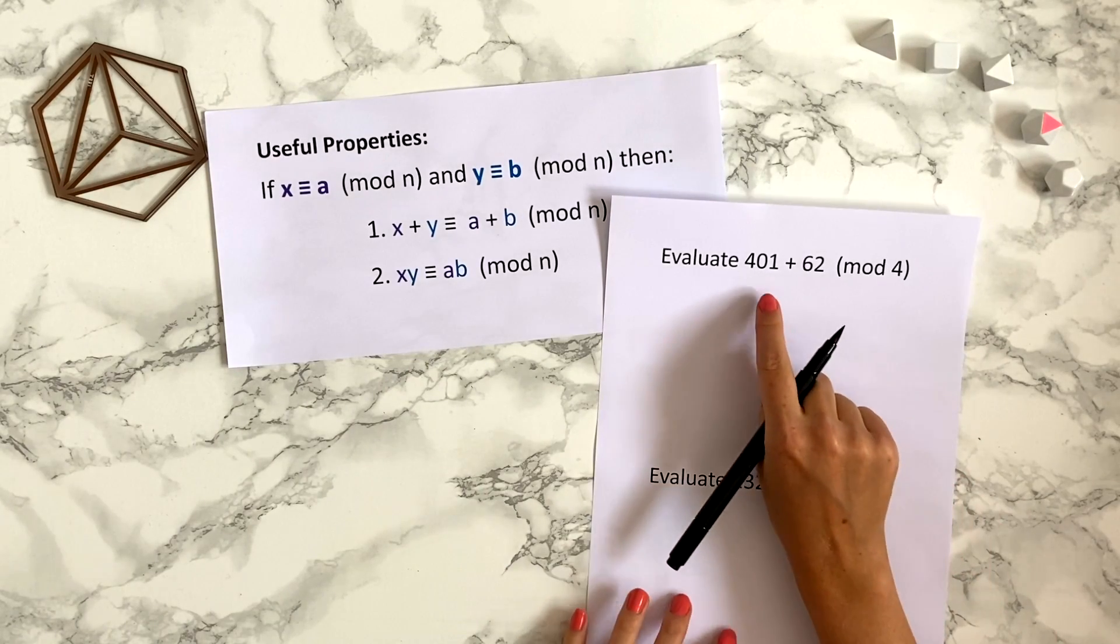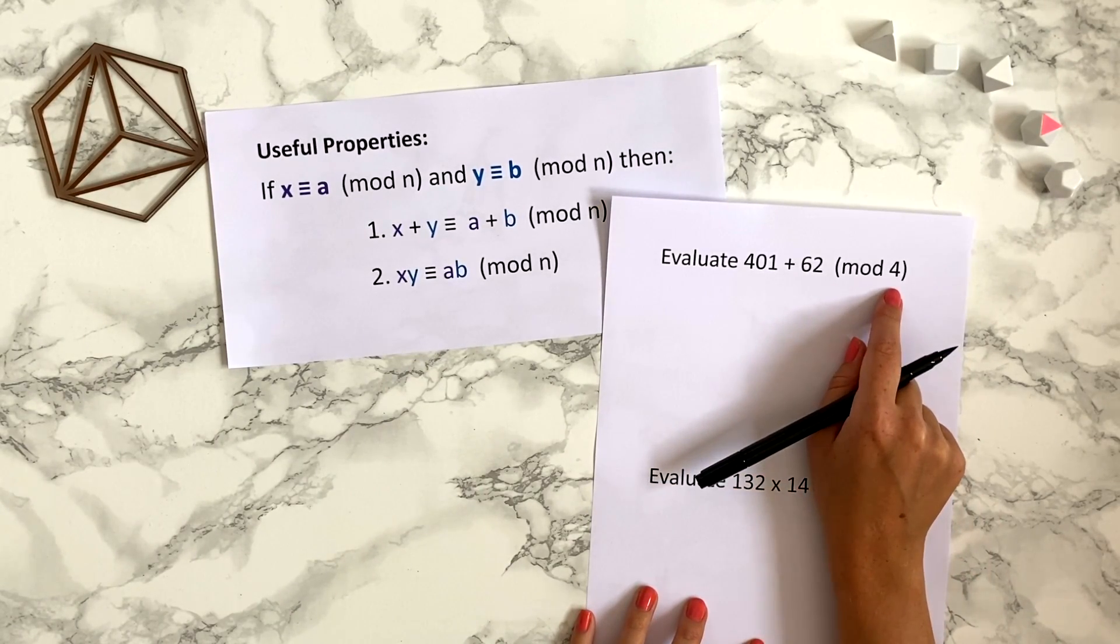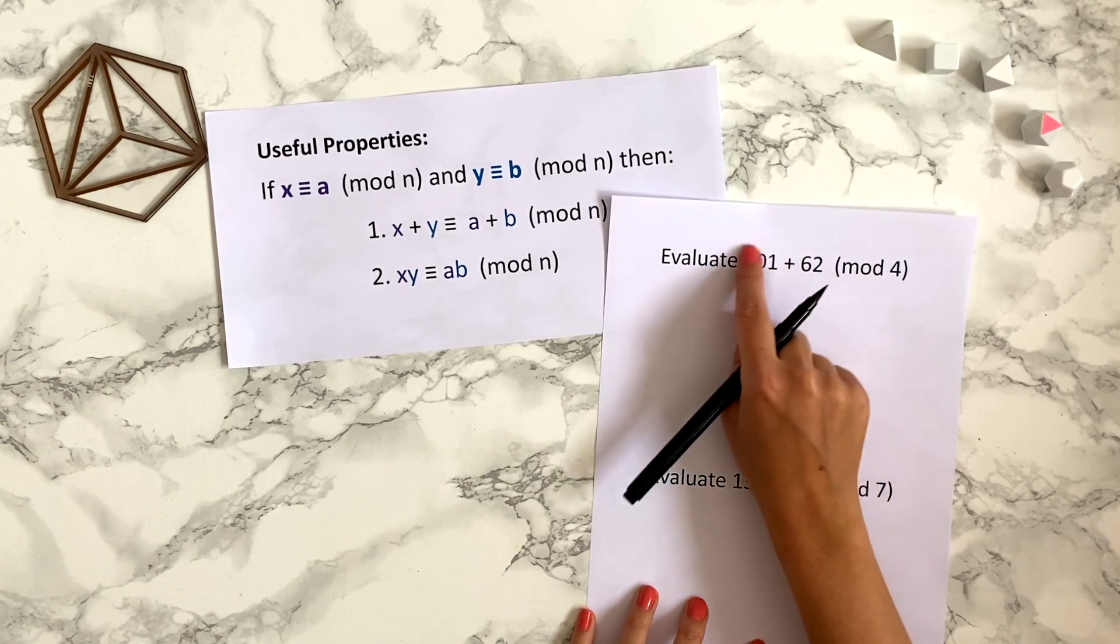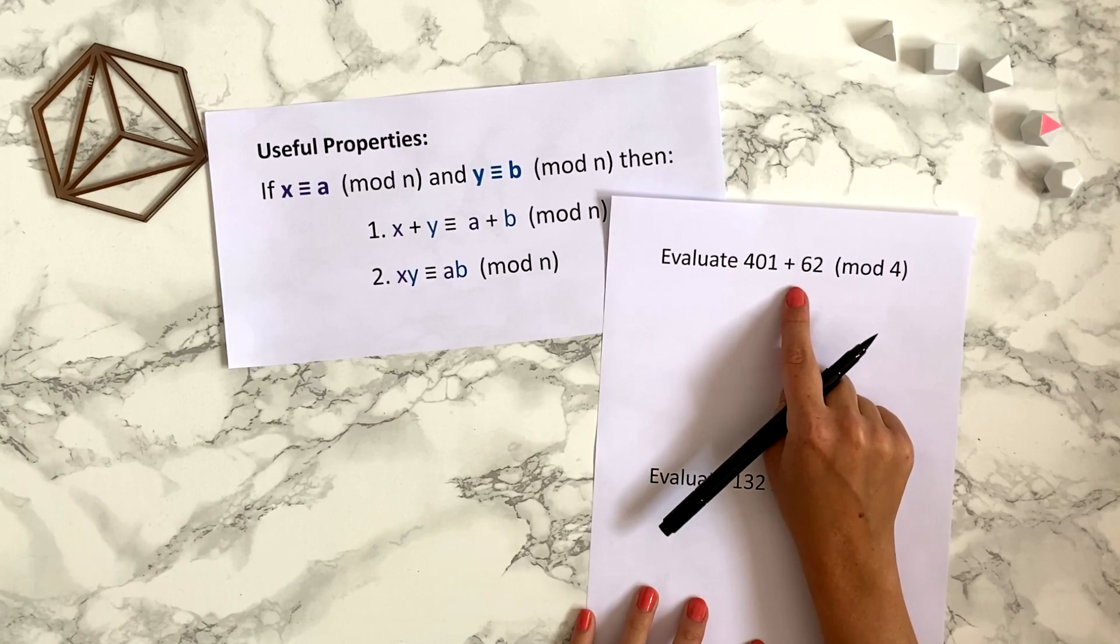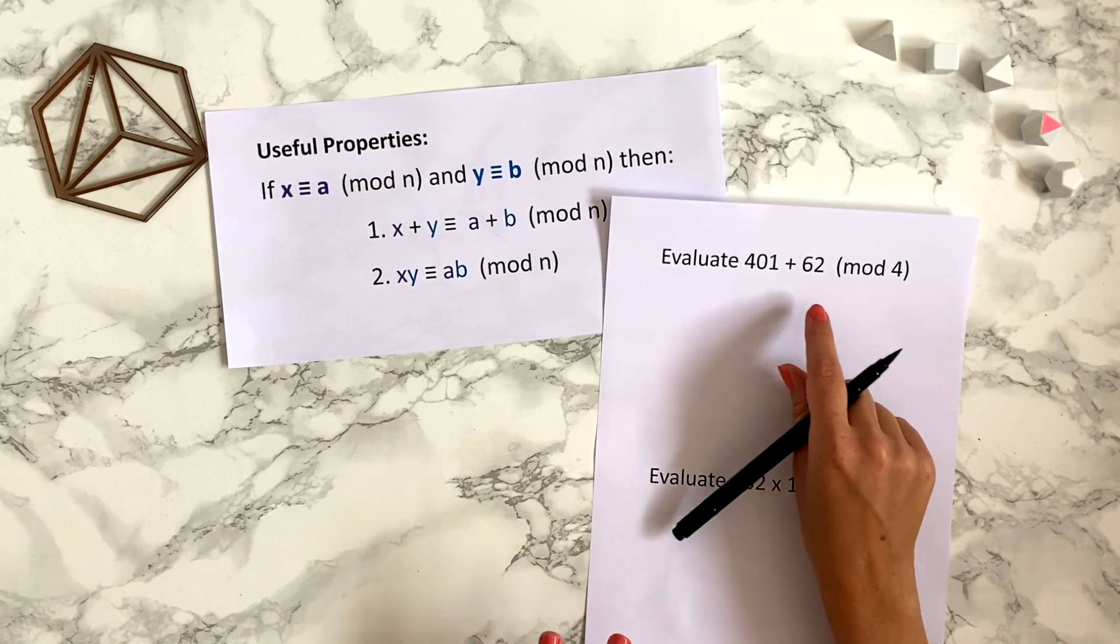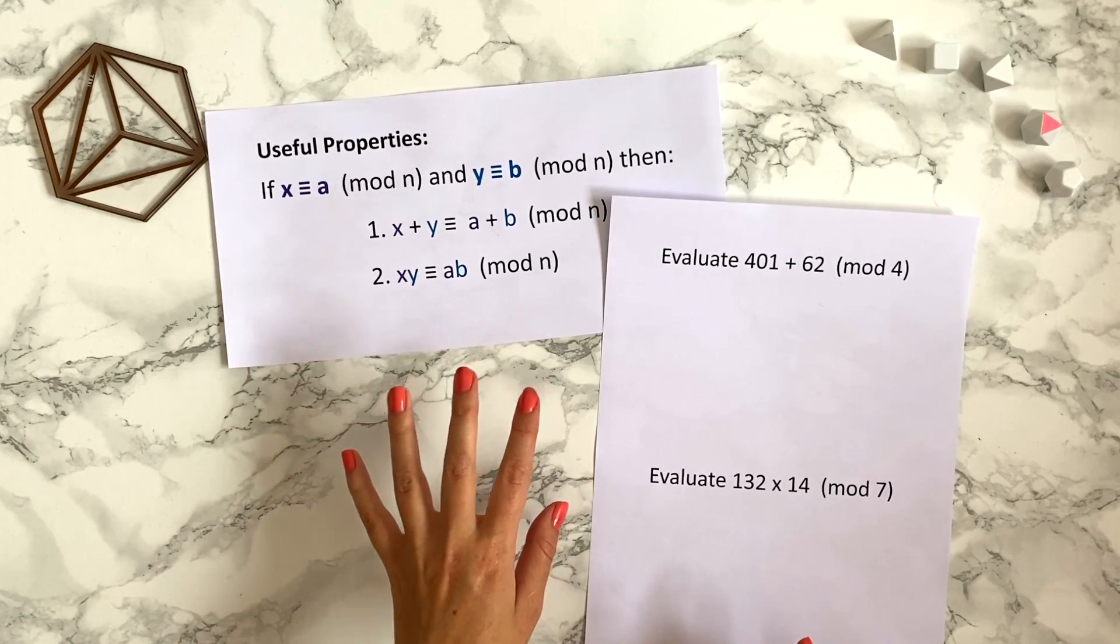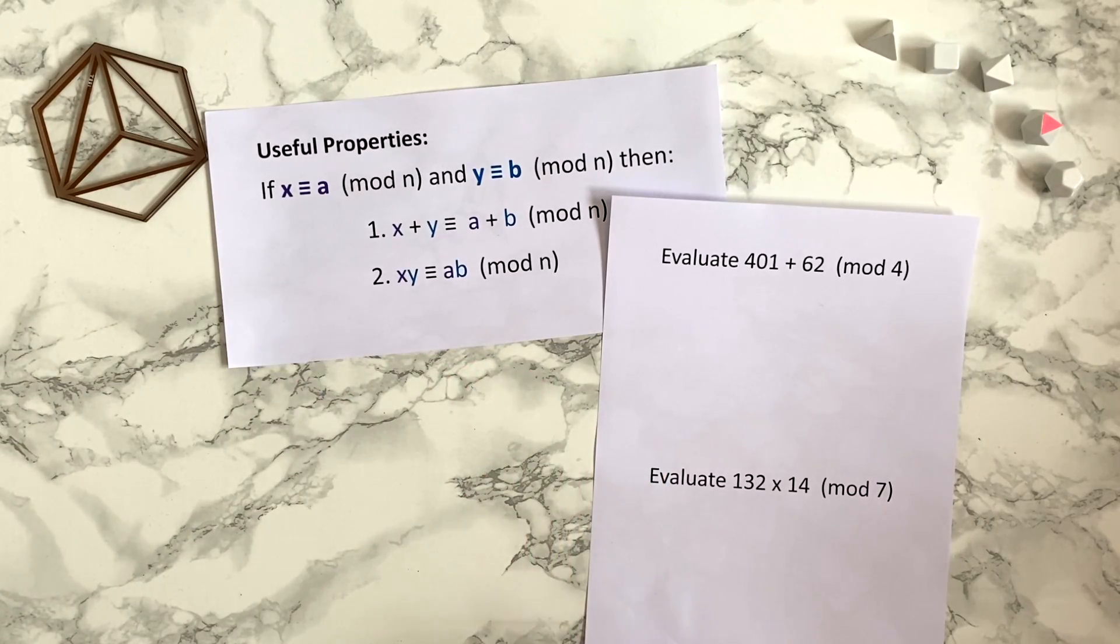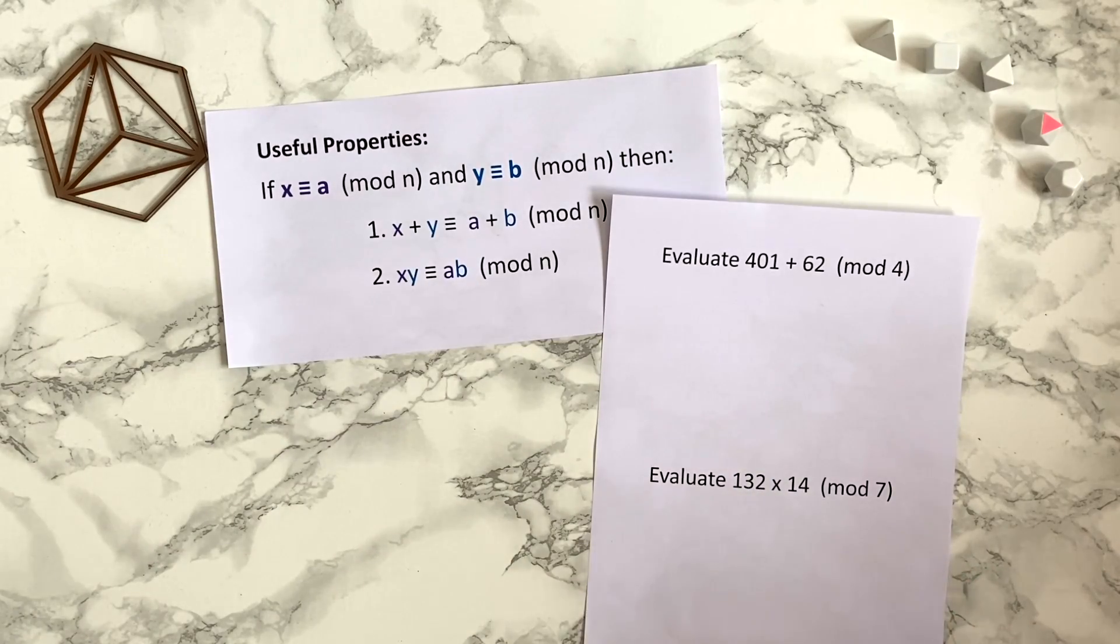So say we want to work out 401 + 62 modulo 4. We could calculate what 401 + 62 is first, so that's 463, and then work out what this bigger number is modulo 4. But now we have this theorem and this theorem makes it a little bit easier. Instead of adding together these two numbers and then working out what that is modulo 4,